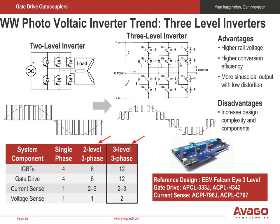This slide compares a dual-level inverter to a three-level, three-phase inverter. The total number of gate drivers, plus current and voltage sensors needed, are shown here. The advantages and disadvantages of a multi-level, three-phase inverter are also shown. Although more complex to design, the three-level, three-phase inverter has a higher rail voltage, higher conversion efficiency, and a more sinusoidal output that results in lower distortion.